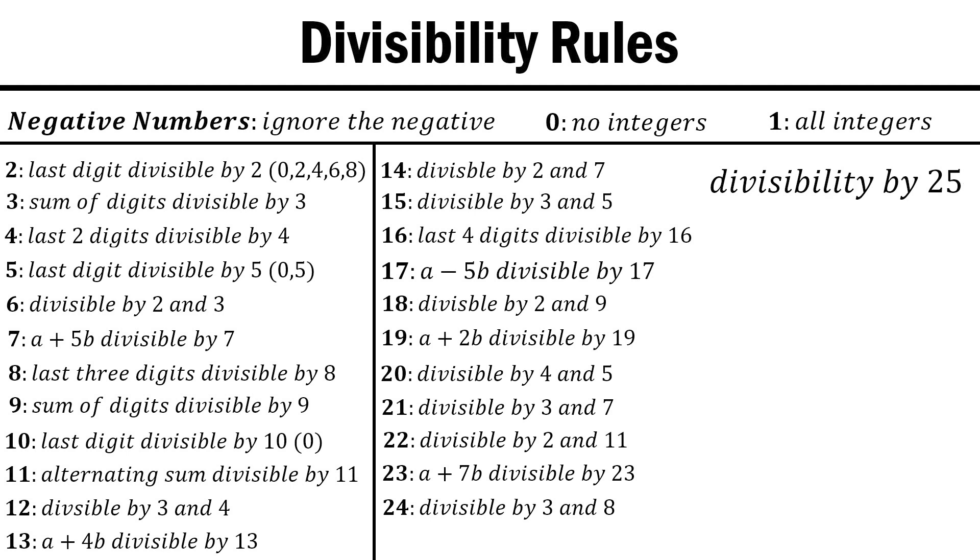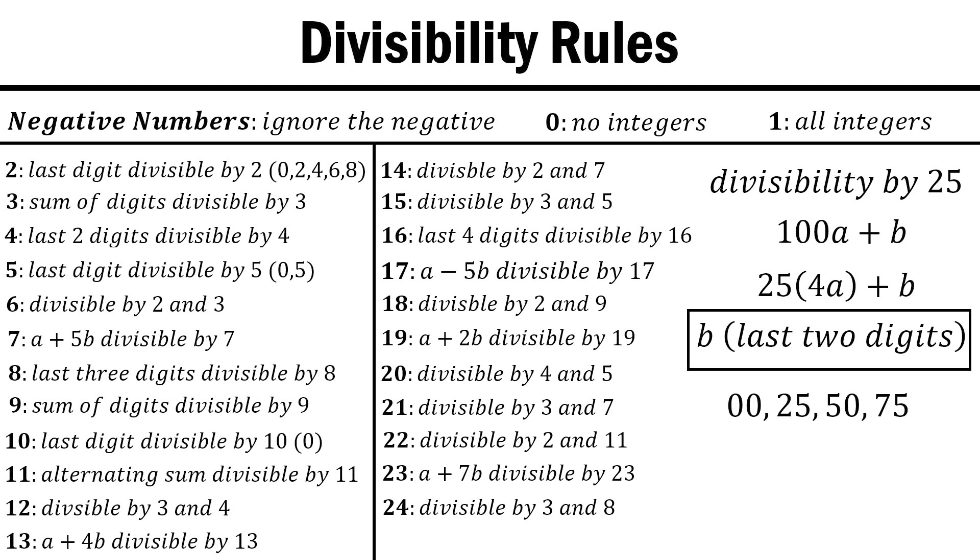Finally, we arrive at 25, and we make b represent the last two digits again to give us 100a plus b. 25 divides 100, meaning we only have to check that the last two digits are divisible by 25. The only two-digit numbers for which this is true are 0, 25, 50, and 75.